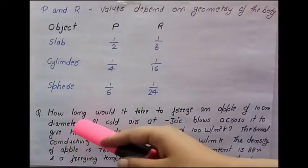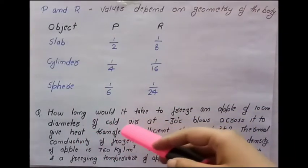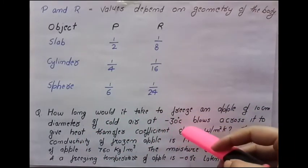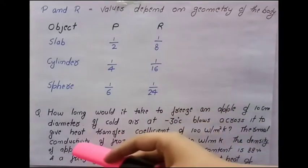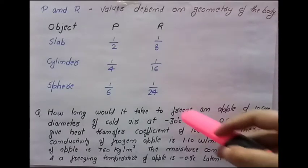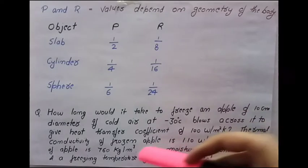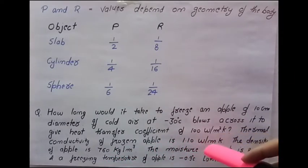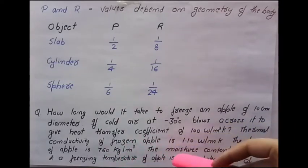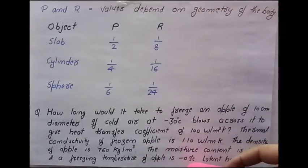The first is how long would it take to freeze an apple of 10 cm diameter if cold air at minus 30 degree centigrade blows across it to give heat transfer coefficient of 100 Watt per m² K. Thermal conductivity of frozen apple is 1.10 Watt per meter Kelvin. The density of apple is 760 kg per meter cube. The moisture content is 88 percent and the freezing temperature of apple is minus 0.9 degree centigrade.